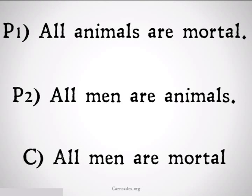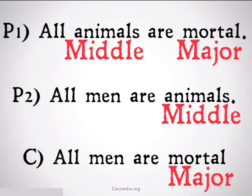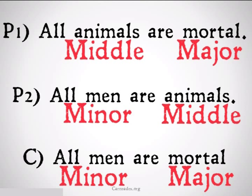As we learned in our last video, this is a standard categorical syllogism. The term that's used in both the premises is called the middle term, the predicate of the conclusion is the major term, and the subject of the conclusion is the minor term.